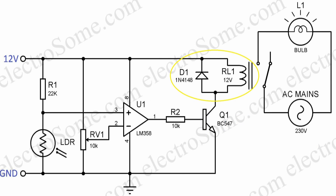Which turns the relay on. The relay is operated by a solenoid which has inductance. Inductance will store charge and will produce negative voltages when the relay is switched off. The flyback diode D1 is used to suppress the effect of these negative voltages.